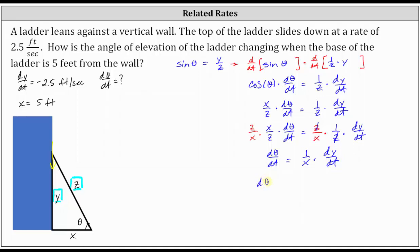We can now determine dθ/dt. When X is five feet and dy/dt is negative 2.5 feet per second, this gives us 1/5 times negative 2.5, which equals negative 1/2. The units are radians per second. So right when the base of the ladder is five feet from the wall, the angle of elevation is decreasing at a rate of 1/2 radian per second.